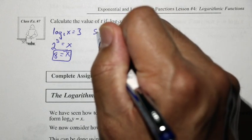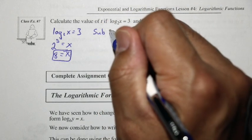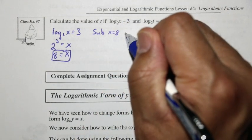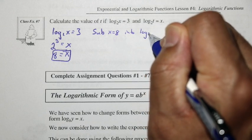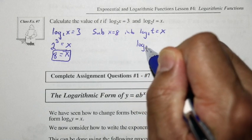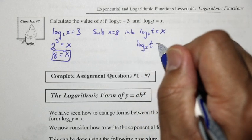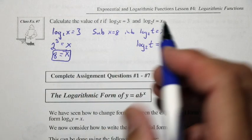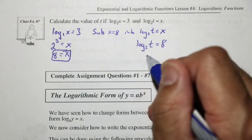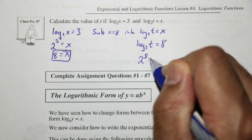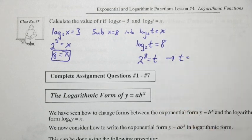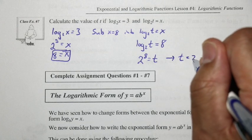Using that value, we substitute 8 for x into the second equation: log base 2 of t is equal to x. So we have log base 2 of t equaling 8. Changing from log form to exponential form again, 2 to the exponent 8 is equal to t. We find that t is equal to 256.